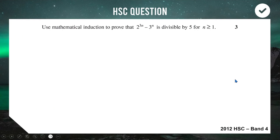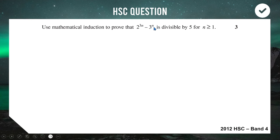On to example five — an HSC question from 2012, Band 4, so a bit spicier. We're looking at 2^(3n) − 3^n and trying to show this is always divisible by five for n ≥ 1.